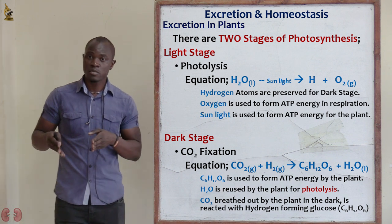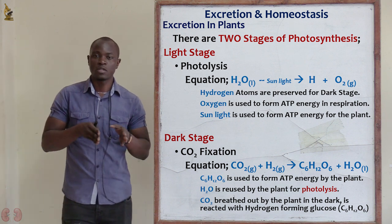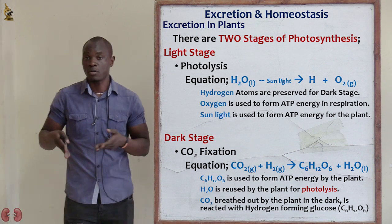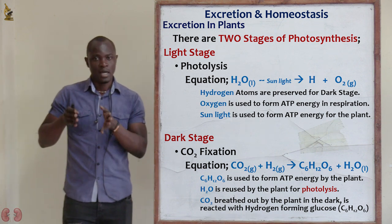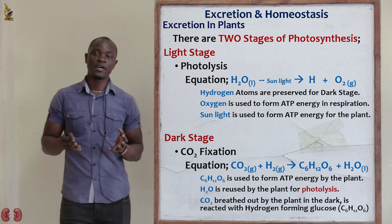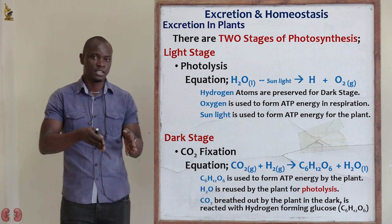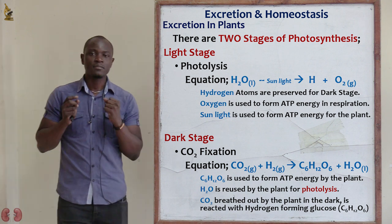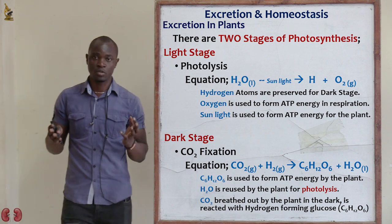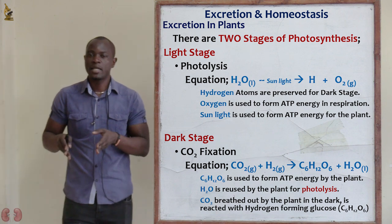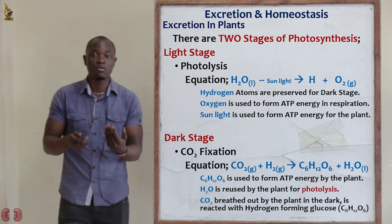For example, in the process of photosynthesis, during photolysis, water is broken down into hydrogen atoms and oxygen gas. Hydrogen enters the dark stage, while oxygen is the byproduct — the waste product — of the light stage. Excess oxygen is released into the atmosphere, while some oxygen is retained by the plant.